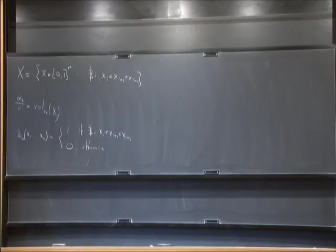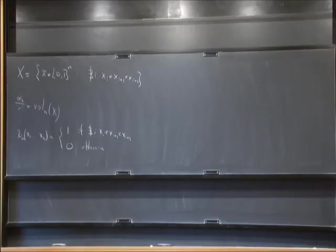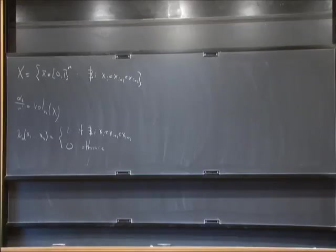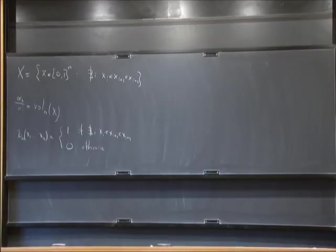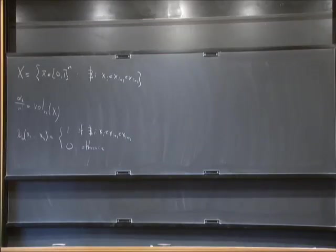The volume argument has mostly been used when the sets you are considering are convex, and then you use some inequalities or to prove results about the number of linear extensions. There's also the fact that if you slice the cube one way and then another, the volume is given by the Eulerian numbers.